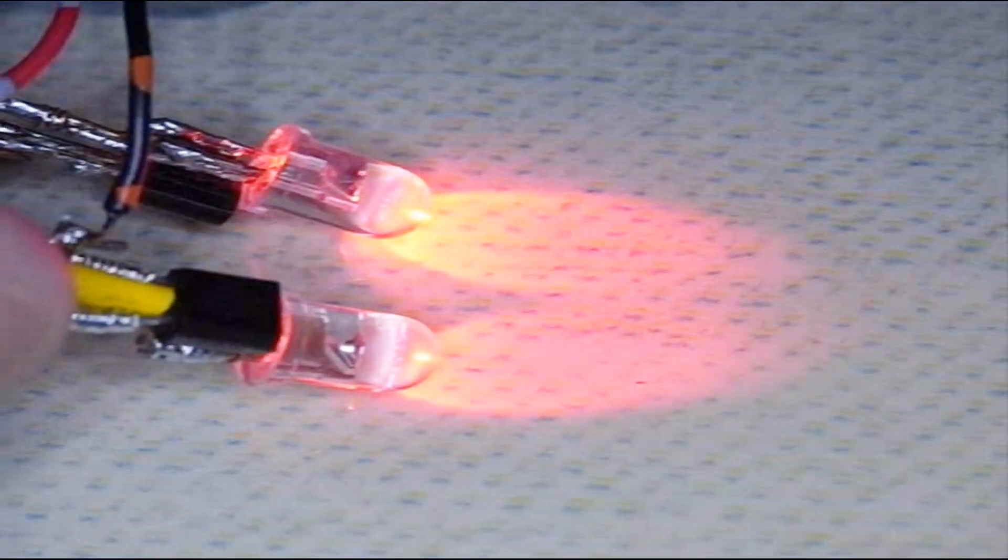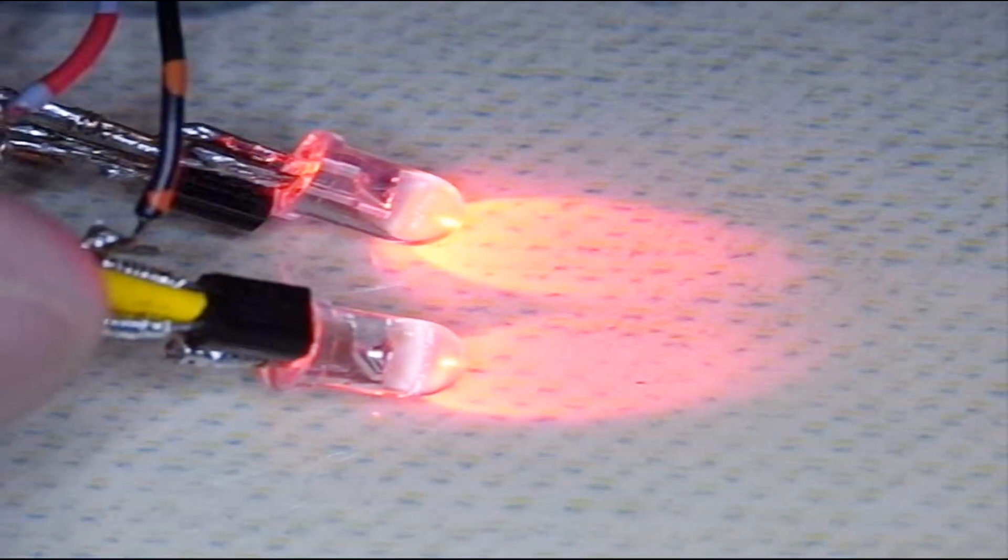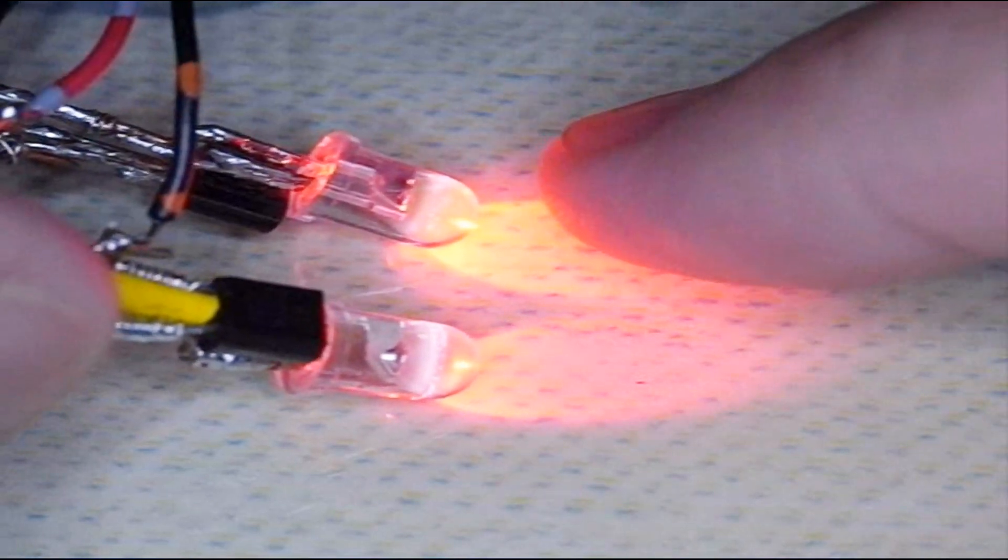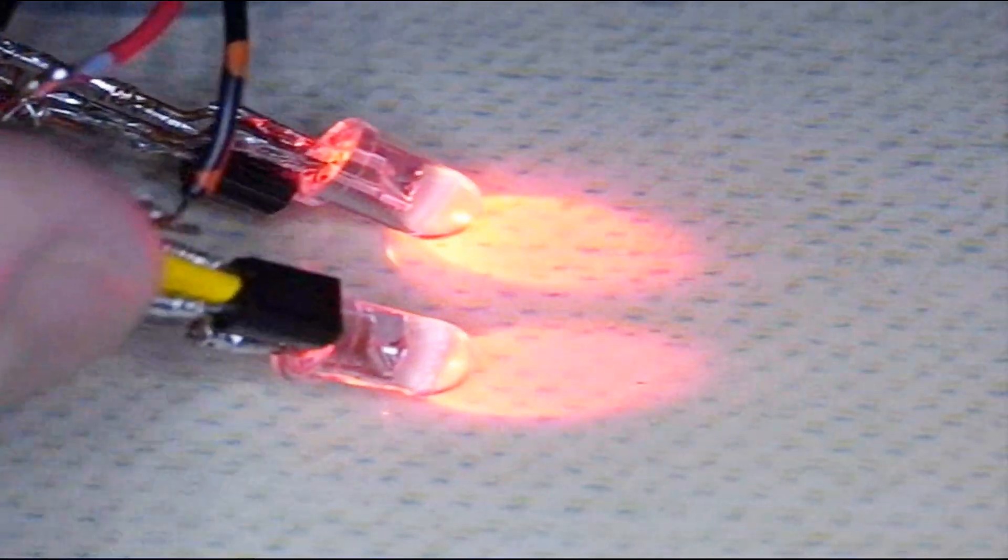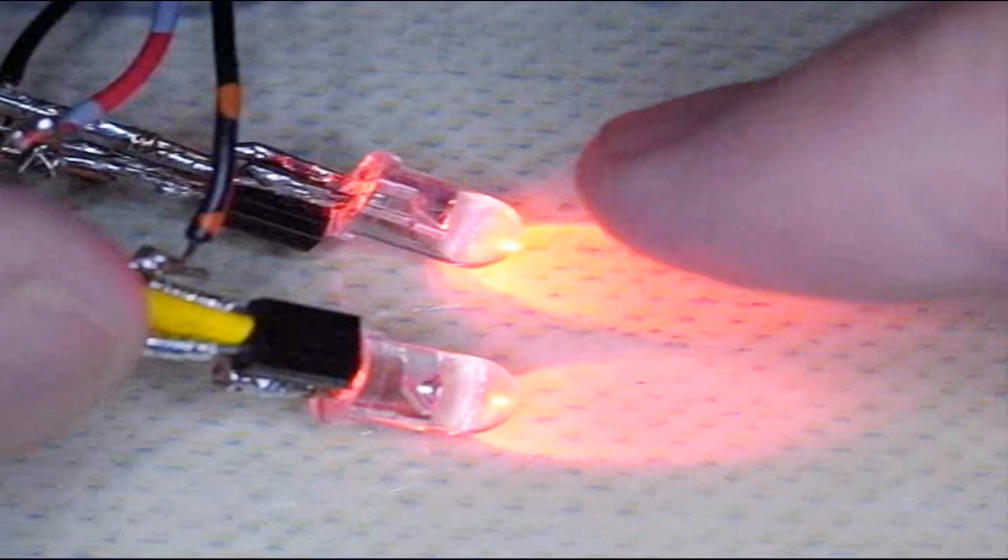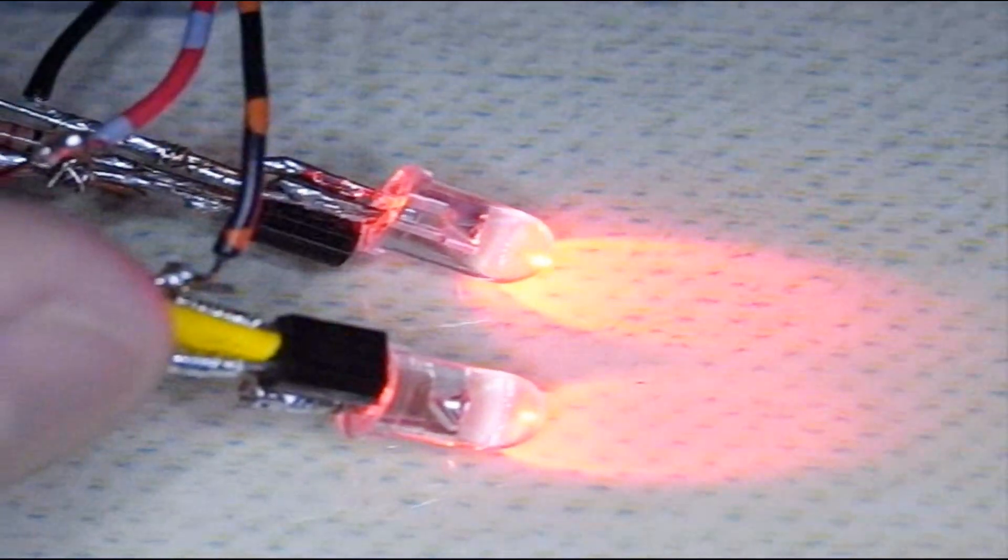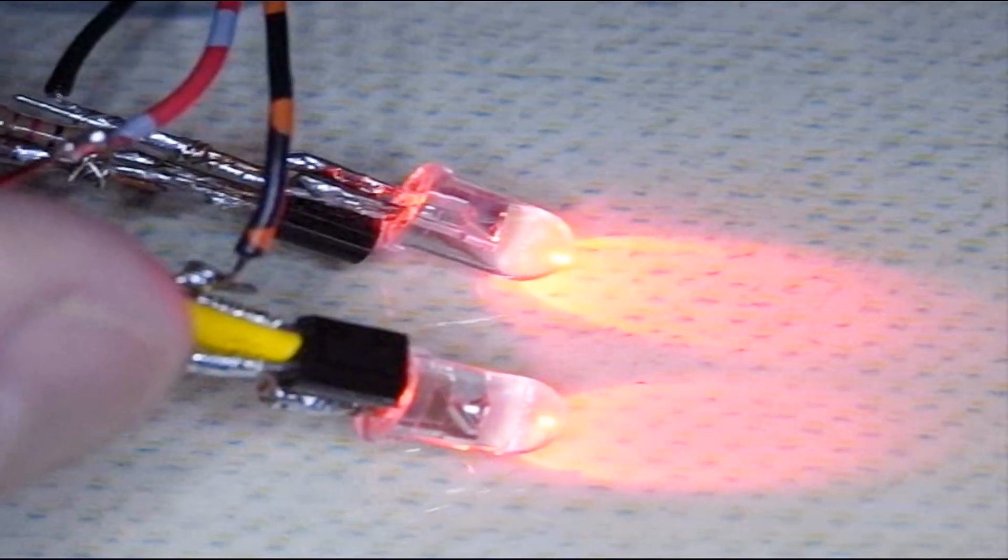Well here they both are. They're connected to the same battery. Pointing at the table. And to me it appears the top one is a little bit brighter. It doesn't matter when I change the angle a little bit. But the top one typically comes out ahead. And so which one is that?